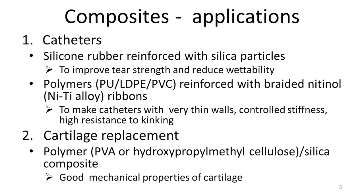Applications include catheters made of silicone rubber reinforced with silica particles, which improves tear strength and reduces wettability. Polymers like PU, LDPE, and PVC reinforced with nitinol — a nickel-titanium alloy — allow very thin walls, controlled stiffness, and high resistance to kinking. Without this alloy, the polymer tubing may get kinked.